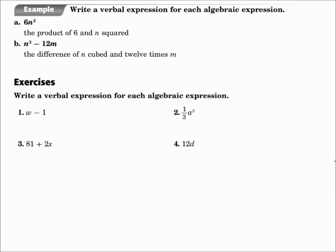Example B: n cubed minus 12m. Since we have subtraction, you could say the difference of — and what are you taking the difference of? N cubed and 12 times m. Remember, there are other ways to write this; this is just one way.